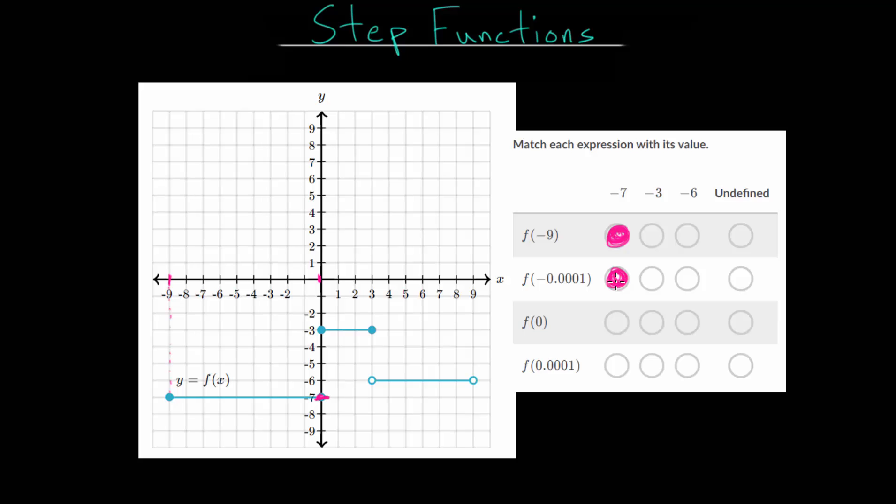In a lot of these problems the trickier problem types are going to be the ones where they're on the border. Now f of zero, like I mentioned, is going to be at negative 3 since that actually includes that endpoint. So when you plug in zero to this function you get negative 3 because we have that filled in circle there.